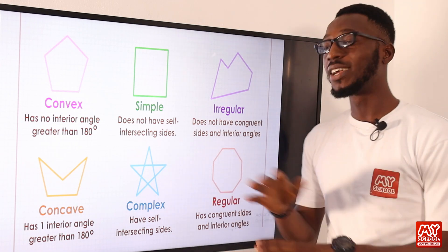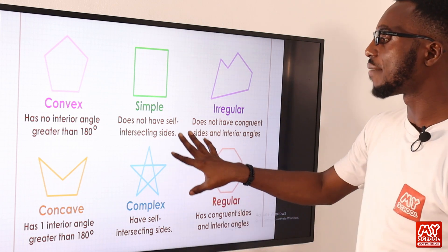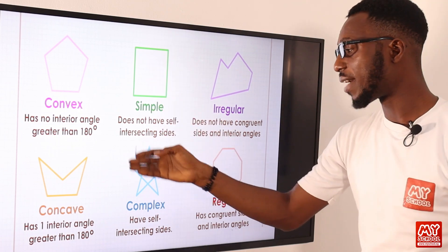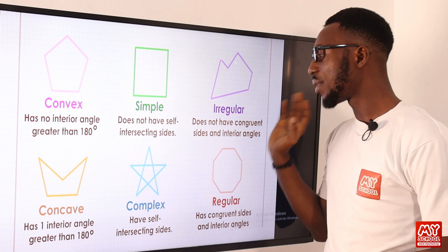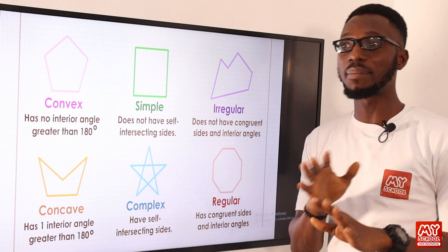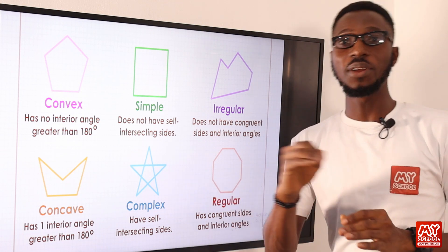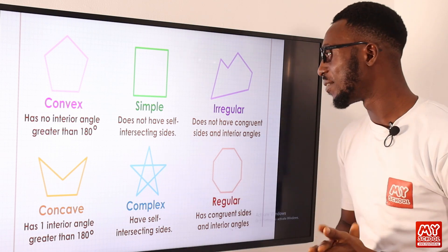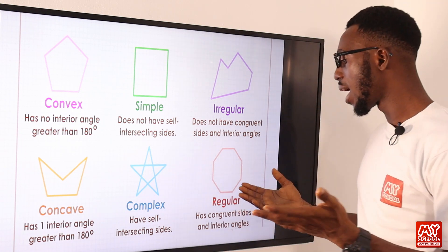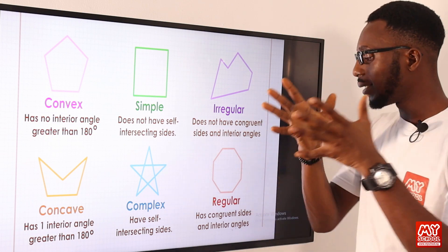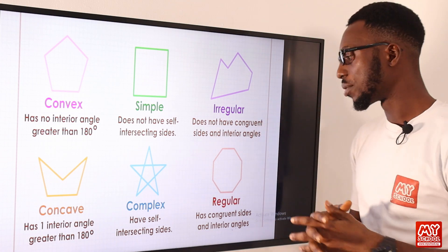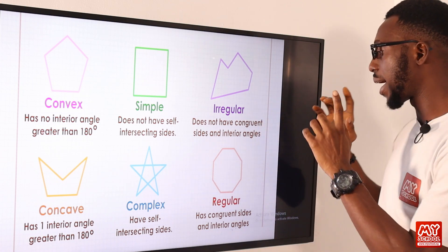We also have the concept of the simple and the complex polygon. A simple polygon does not have self-intersecting sides, whereas a complex polygon has several intersecting sides. Then we have the regular and the irregular polygon. An irregular polygon does not have congruent sides and interior angles, whereas a regular polygon has congruent sides and interior angles — they are equal.